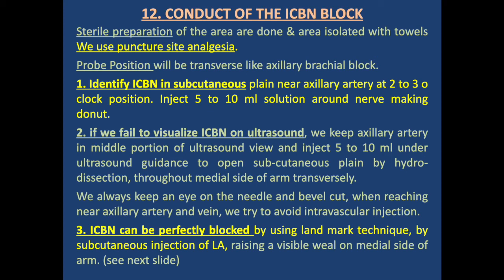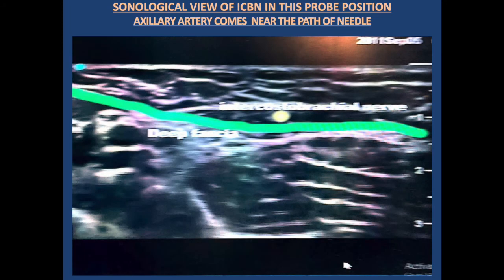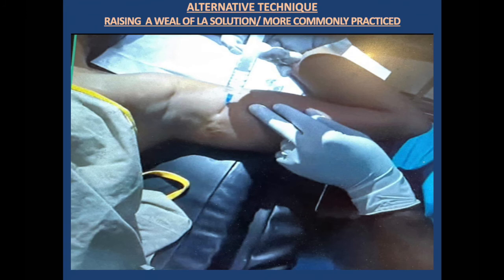Technique 3: the intercostal brachial nerve can be blocked using the landmark technique by subcutaneous injection of local anesthetic, raising a visible wheal on the medial side of the arm. Diagrams show the probe position on the axillary artery and the medial side of the arm, the intercostal brachial nerve anatomically posterior to the axillary artery (lateral at two to three o'clock on ultrasound), above the deep fascia, and local anesthetic injected around the nerve. An alternative diagram shows the landmark technique without ultrasound by raising a subcutaneous wheal — a more commonly practiced technique in areas without ultrasound.